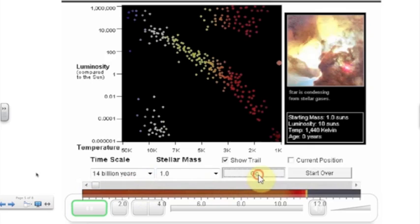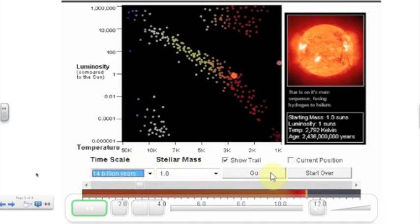This computer simulation is set up just like the HR diagram. We have on the y-axis luminosity increasing as we go up and on the x-axis we have temperature decreasing as we go to the right. So we have our main sequence stars here in the middle.